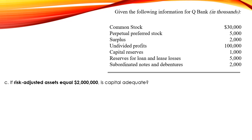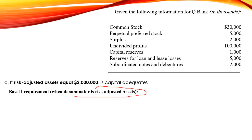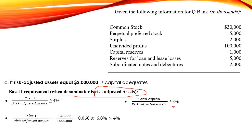Question C: if risk-adjusted assets are equal to $2,000,000, is capital adequate? We are again using Basel 1 requirements, but now the denominator is risk-adjusted assets. The requirements are: Tier 1 over risk-adjusted assets must be higher than 4%, and total capital over risk-adjusted assets must be higher than or equal to 8%. Tier 1 over risk-adjusted assets equals $137,000 / $2,000,000 = 0.068, or 6.8%, which is higher than the required 4%, so Tier 1 capital is adequate.